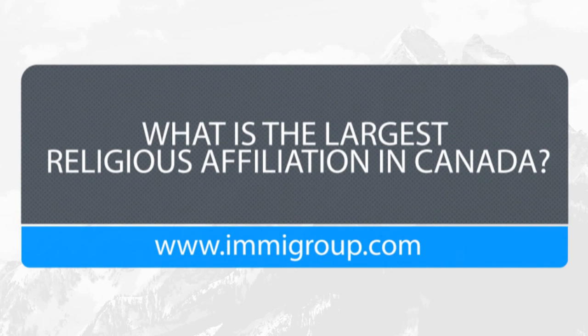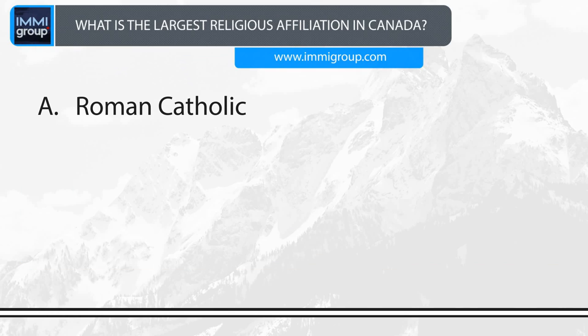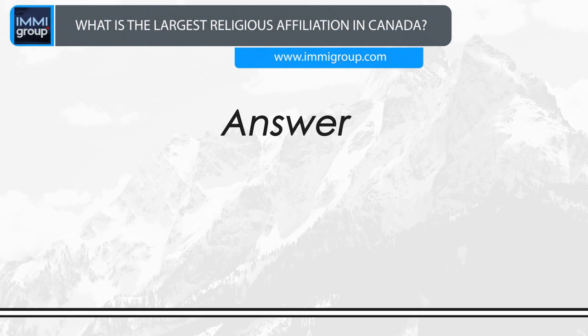What is the largest religious affiliation in Canada? A. Roman Catholic. B. Muslim. C. Jewish. D. Hindu. Answer: Roman Catholic.